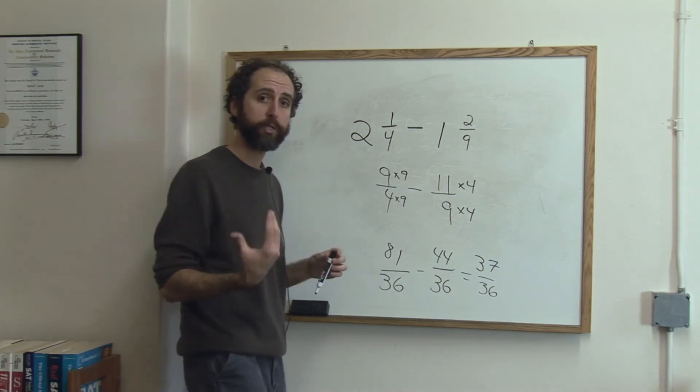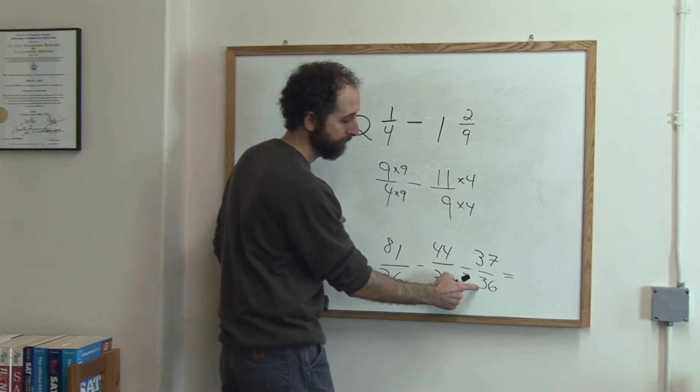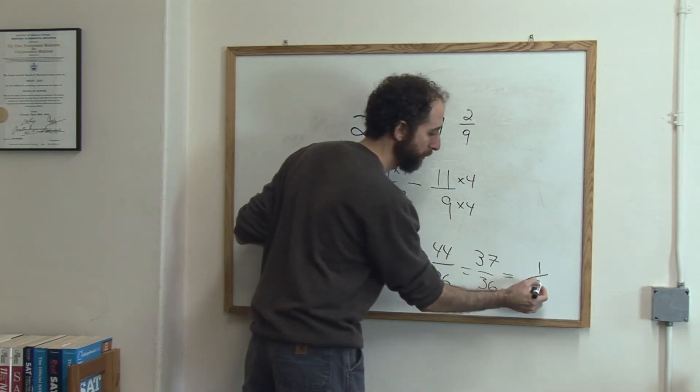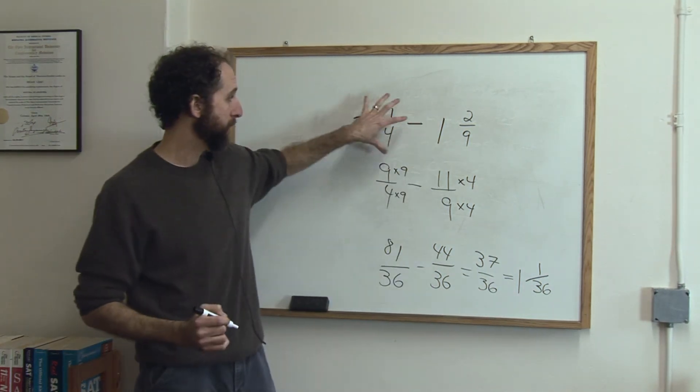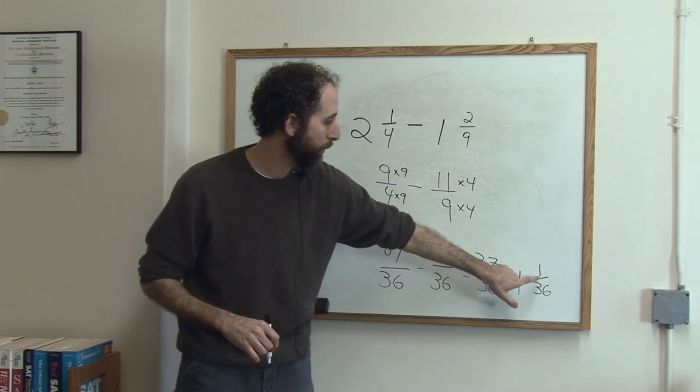So a lot of times teachers like you to simplify that. So we'll do that. If you take 36 out of this, it leaves you with 1 on top. So our final answer, back in a mixed number form or a compound fraction form, is 1 and 1 thirty-sixth.